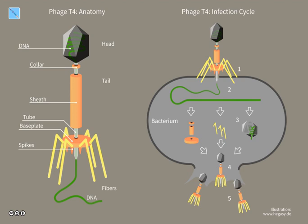Twort's work was interrupted by the onset of World War I and shortage of funding. Independently, French-Canadian microbiologist Félix d'Hérelle, working at the Pasteur Institute in Paris, announced on 3 September 1917 that he had discovered an invisible, antagonistic microbe of the dysentery bacillus. For d'Hérelle, there was no question as to the nature of his discovery: 'In a flash I had understood — what caused my clear spots was in fact an invisible microbe, a virus parasitic on bacteria.'